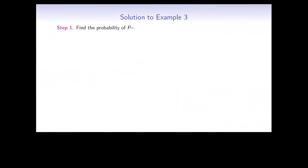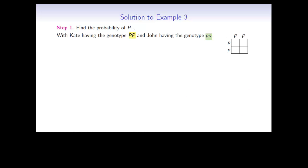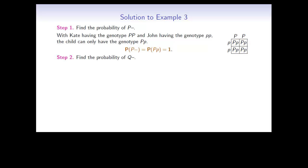First, let's find the probability of P-dash. Kate has genotype big P, big P, and John has genotype small p, small p. We can fill these out in a Punnett square and fill out the different possibilities for their child. Notice that there is only one genotype possible for the child: big P, small p. This means that the probability of P-dash is the same as the probability for big P, small p, which is equal to 1 — in other words, 100%.